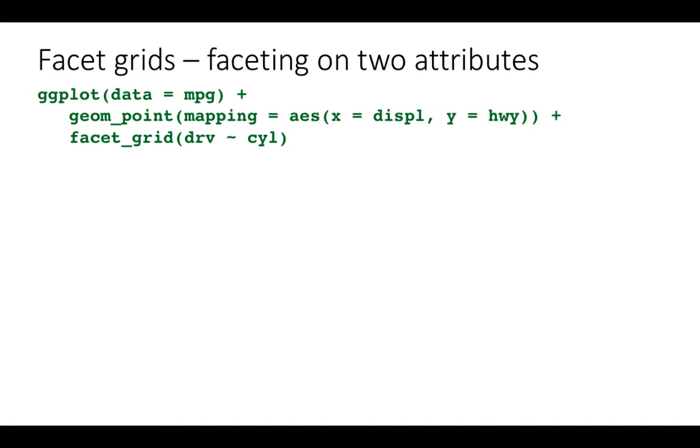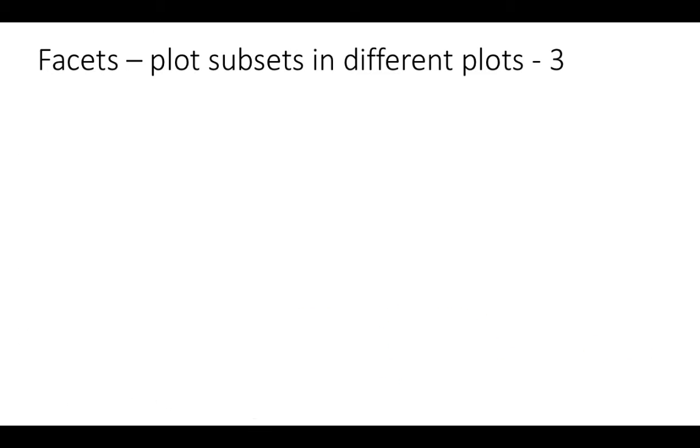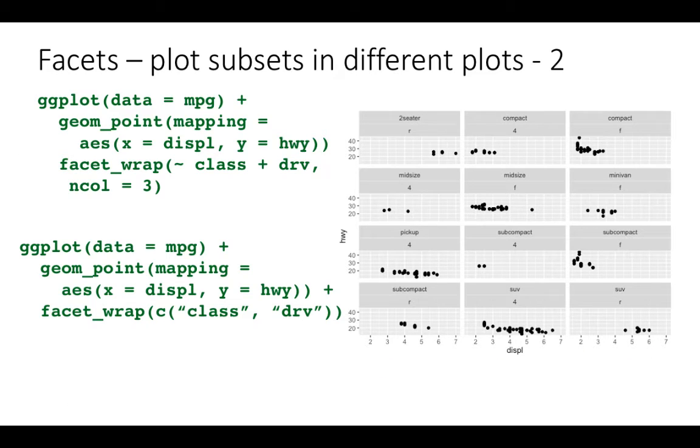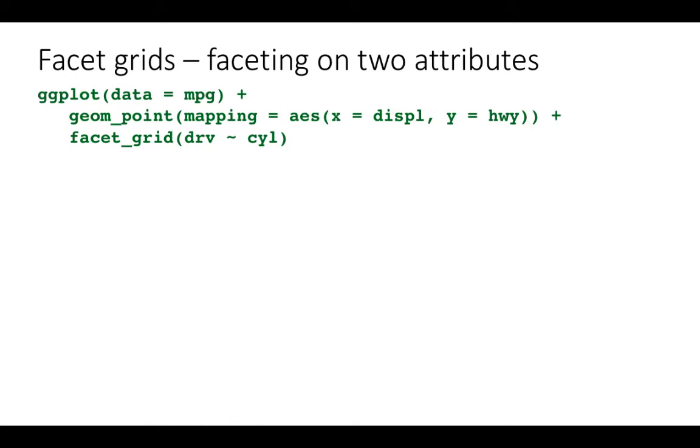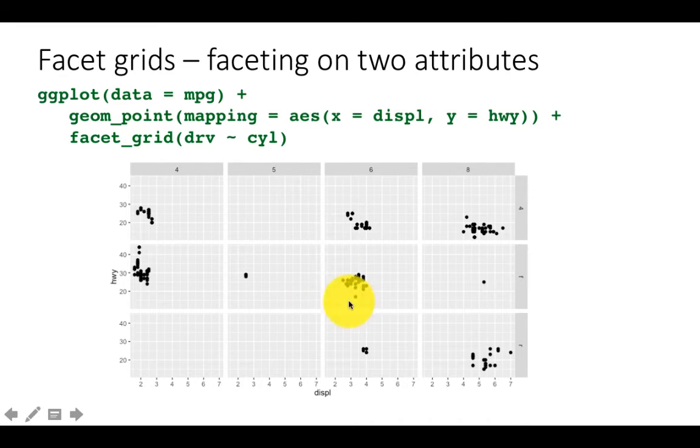Now sometimes, till now we have been faceting on one attribute and of course we did facet on two attributes here, but the two attributes did not appear as row and column. But here we want to facet on two attributes, but we want one attribute to appear along the rows and another to appear along the columns. So in this case, we use what is called as facet grid. Facet wrap is just row by row, it's wrapping. Facet grid maps, shows the two additional variables in a grid. So here you see, this is the drive and here you see that's the number of cylinders. And for every combination, you see a scatter plot. So that is what a facet grid does.